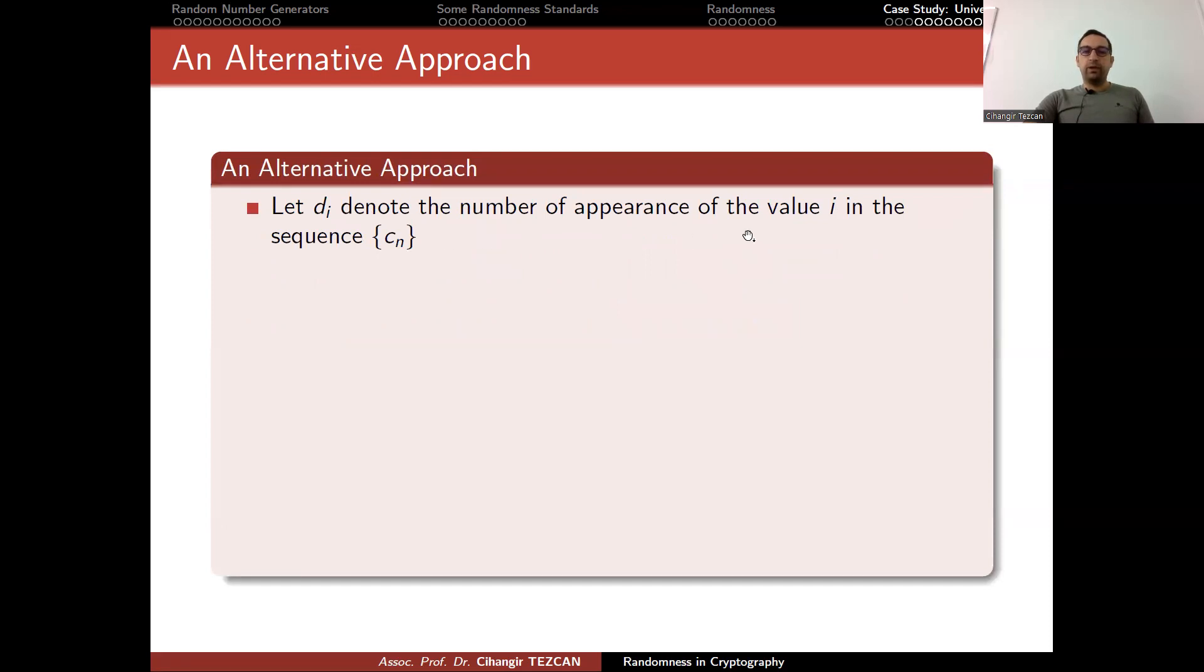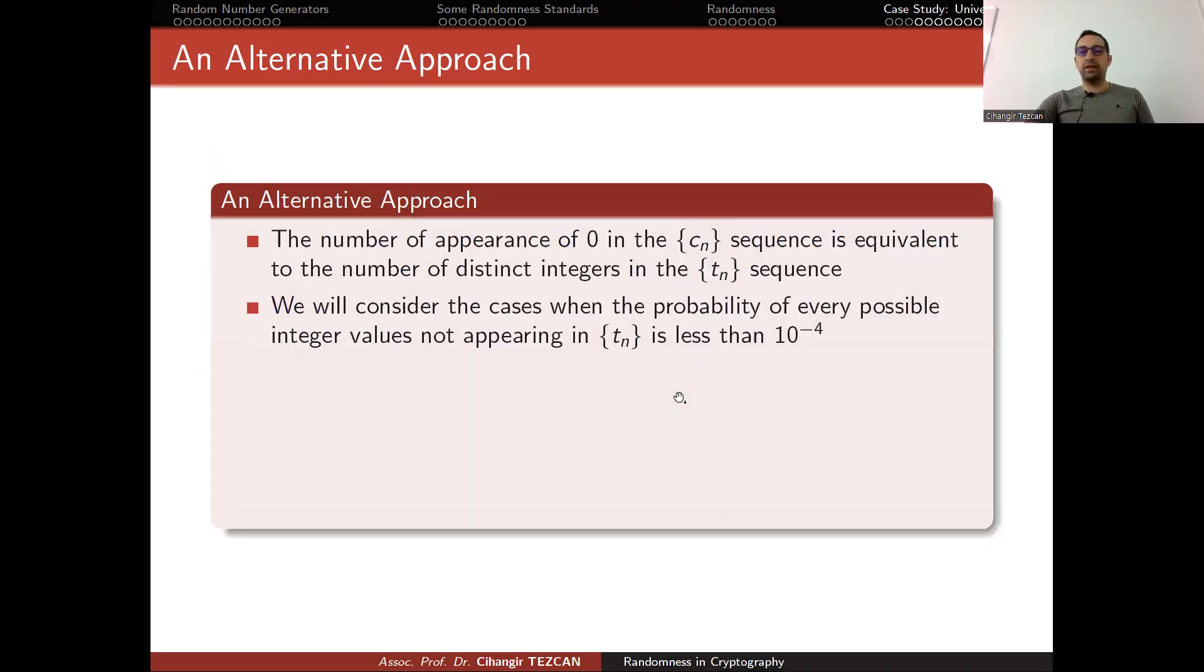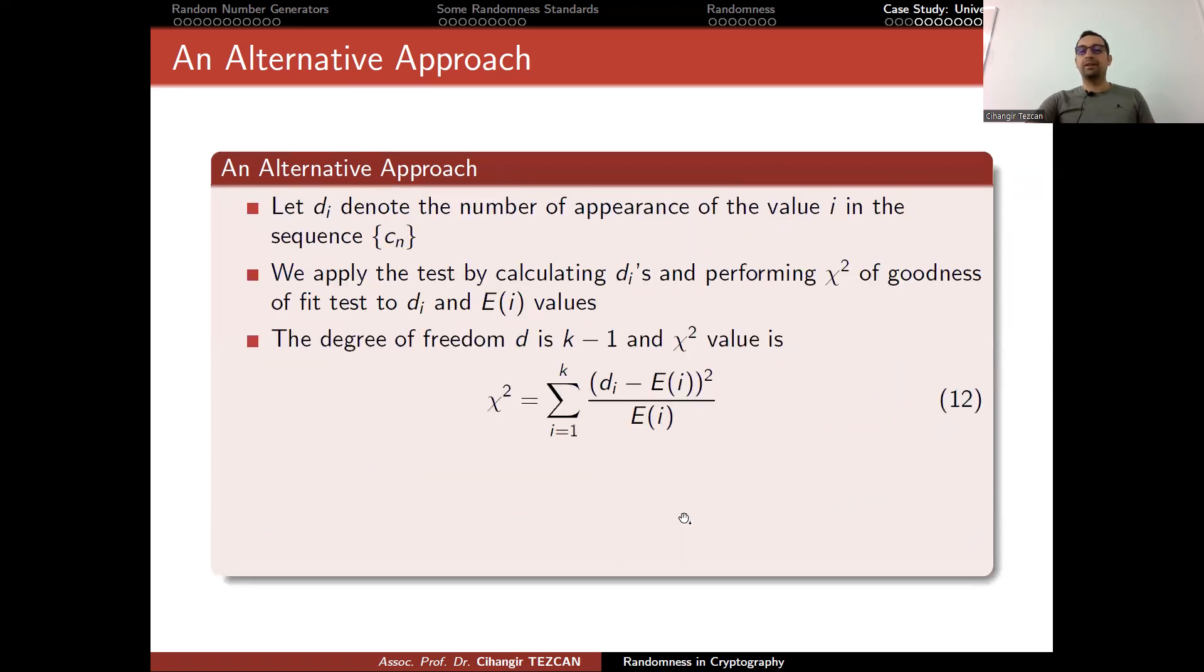Let the I denote the number of appearance of the value I in the sequence C_N. We apply the test by calculating the I's and performing chi square of goodness of fit test to the I and expected values. Chi square testing works like this. You calculate the distances, you write the number of appearances of those distances. We also have the expected value, which I calculated here. This is the value I know, because I know L, R, and K. This is something I can calculate. This is the theoretically calculated value. This is the observed value. Now we want to check how the observed values fit into the expectations. This is what chi square of goodness of fit test means.